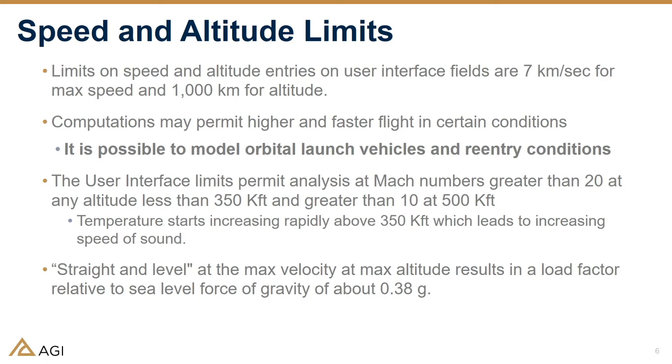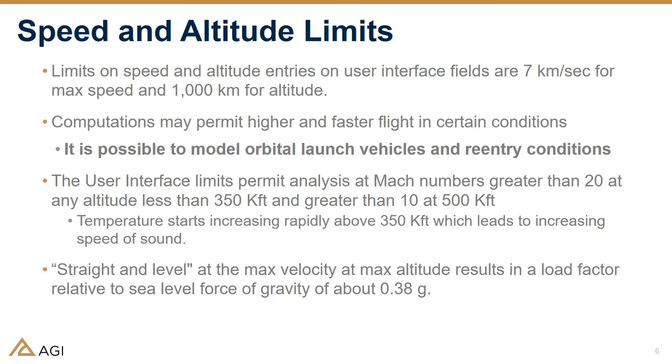You'll be interested to know what the limits are on the software. There are limits within calculations and limits on the user interface entries. The limits on the user interface entries are seven kilometers per second for speed and a thousand kilometers for altitude. You can set up procedures that can go substantially higher and faster than that — say you have a rocket motor boosting a vehicle, you can start at a high and fast altitude and go even higher and faster. But we have to draw the line somewhere. We don't want to infringe on things like STK Astrogator — that's a phenomenal tool with phenomenal accuracy and fidelity. We have no intention of using Aviator to do what Astrogator does and vice versa, so there needs to be a dividing line.